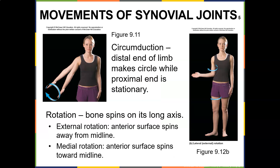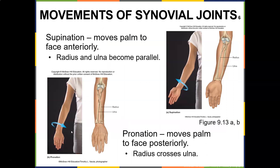Circumduction is where the distal end of the limb makes a circle while the proximal end is stationary. Rotation includes internal and external rotation. Supination is when your palms are up, and pronation is when your palms face down — with the radius and ulna crossing over. In supination the radius and ulna are parallel, but in pronation the radius crosses the ulna.